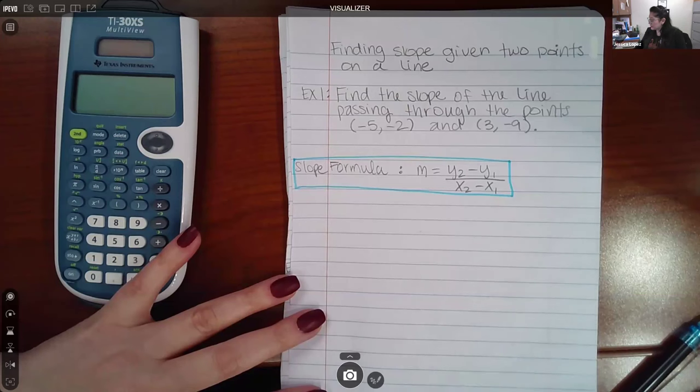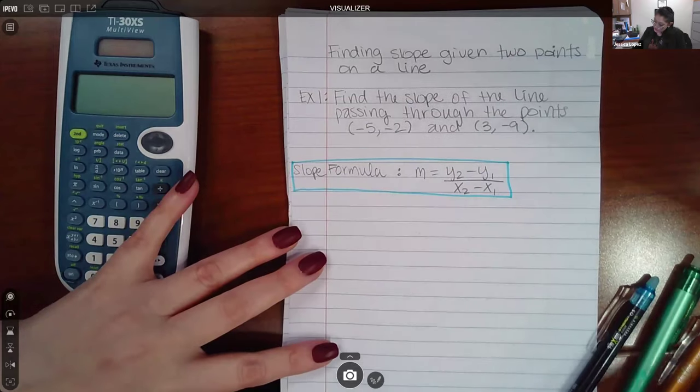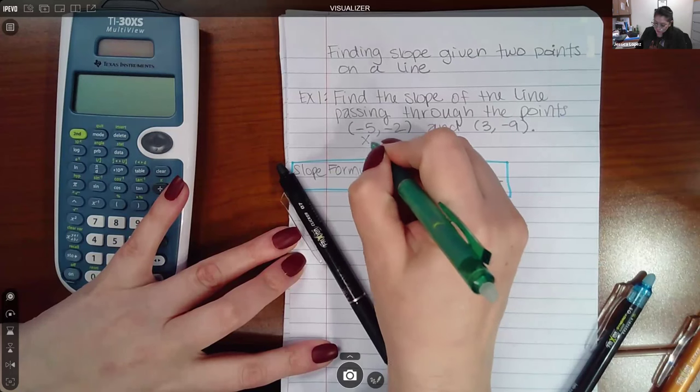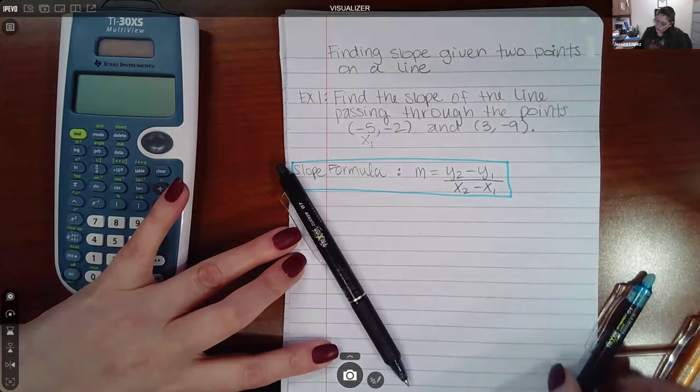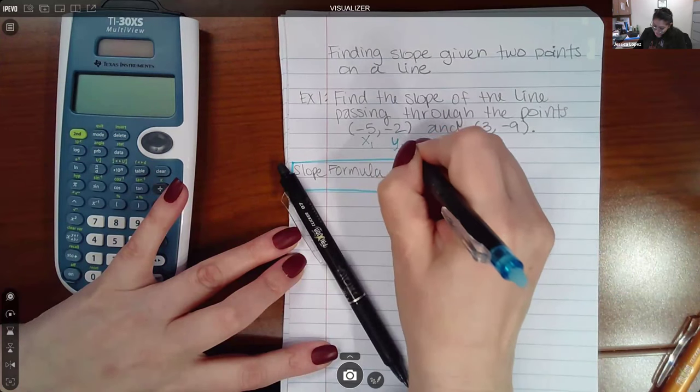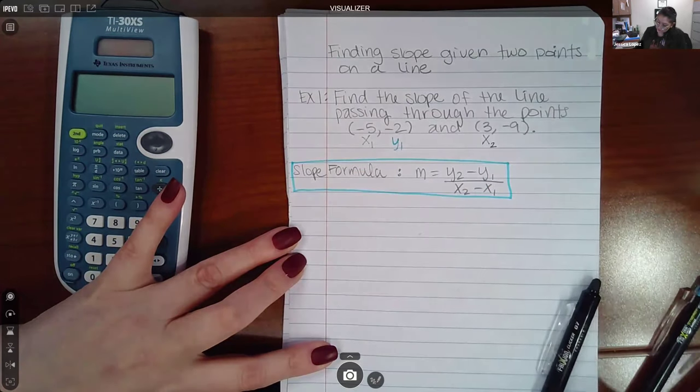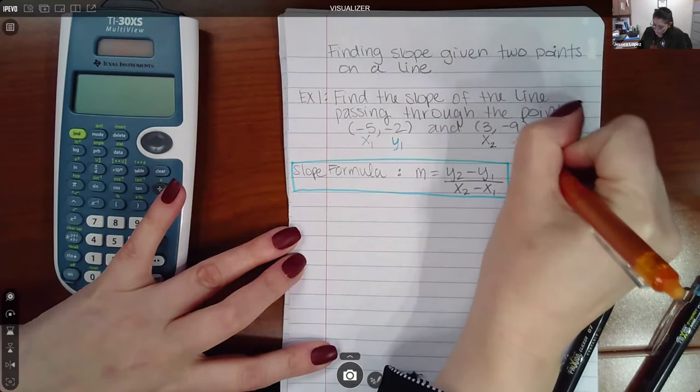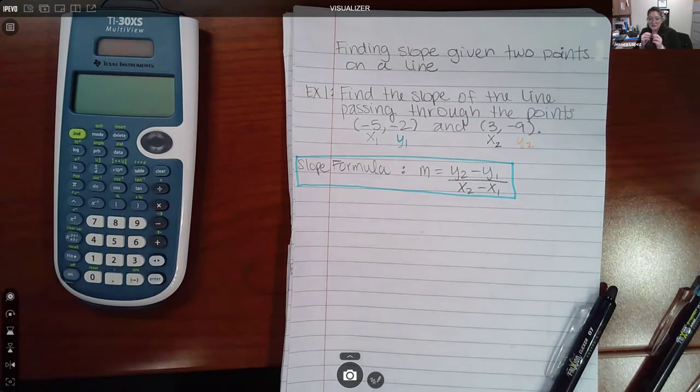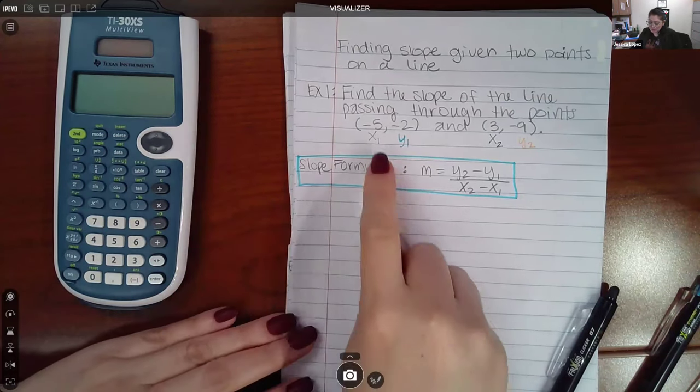I'm going to use different colored pens to distinguish between everything. I'm going to call this first coordinate its X value of the first point, whereas this is the Y coordinate of the first point. This is an X coordinate of the second point, and this is a Y coordinate of the second point. Now that I've labeled everything, the subscript is which point you're referring to—the first point or the second point. That's what this little subscript means.